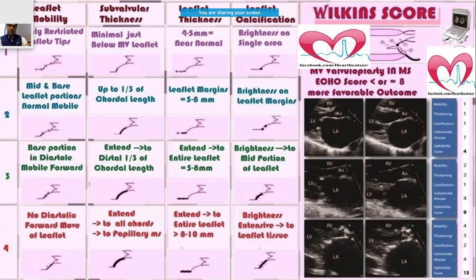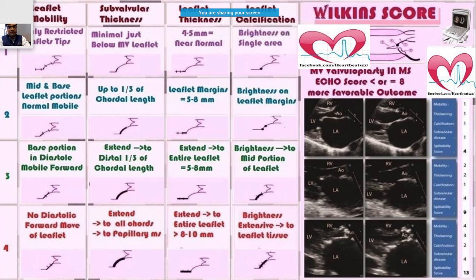Coming to the main topic — mitral stenosis. As I was talking about, there are four gradings using the Wilkins scoring on four parameters. The mnemonic MLCS stands for: M for leaflet Mobility, L for Leaflet thickness, C for Calcification, and S for Subvalvular thickness.